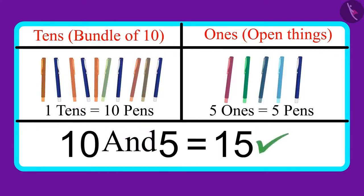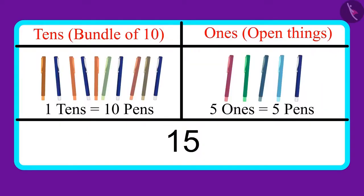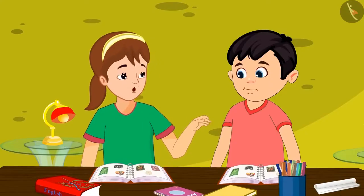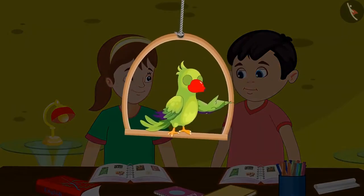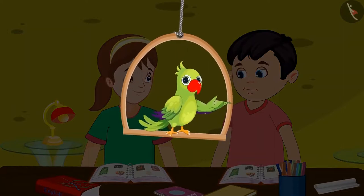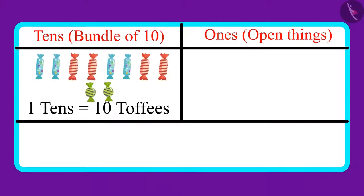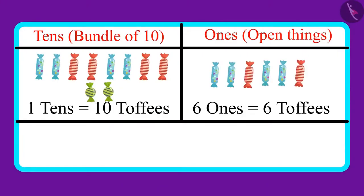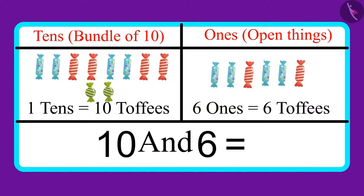Did you understand? Oh, yes, Chotu! This means that one ten and five ones make fifteen. You have understood the topic of tens and ones quite well. Children, have you also understood this topic properly? Come on, let's see. These are some toffees. There are one ten and six ones in the number. Can you tell me how many toffees are there in all? One ten means ten toffees and six ones means six toffees, which means these are sixteen toffees.